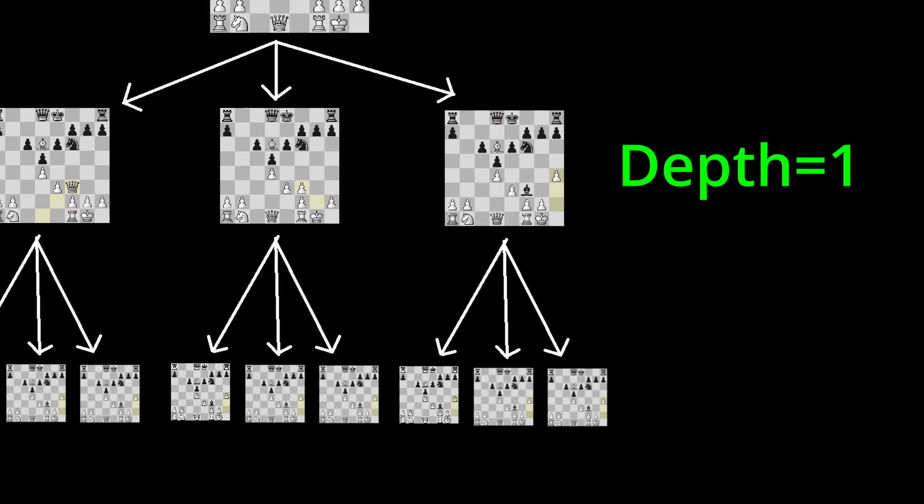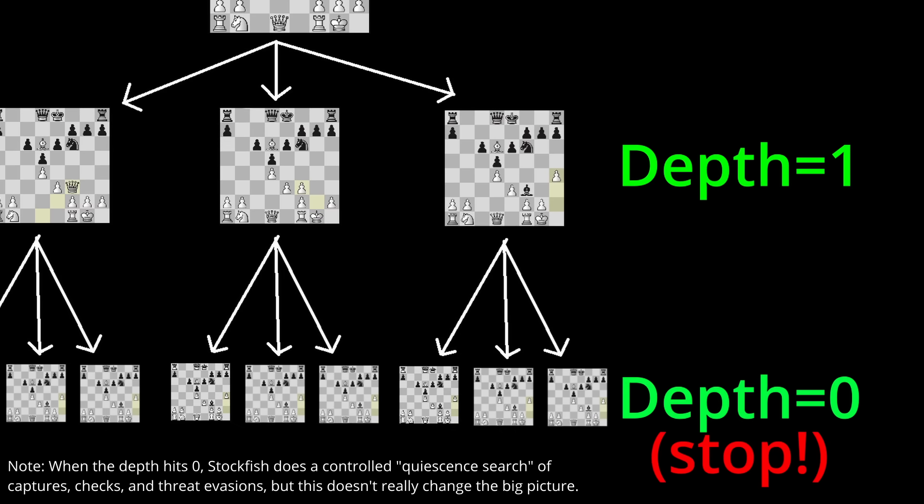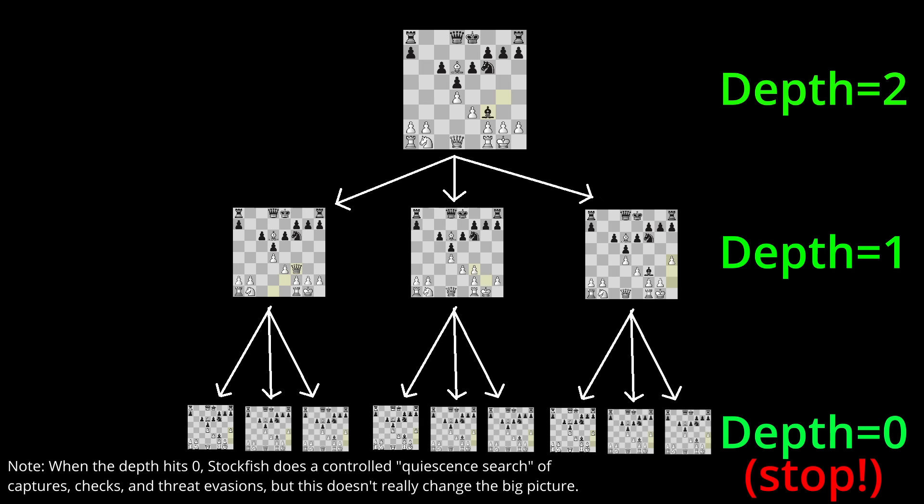Each time it descends one step into the tree, it decreases the depth by one. And when the depth hits zero, it just uses that static evaluation I mentioned earlier.